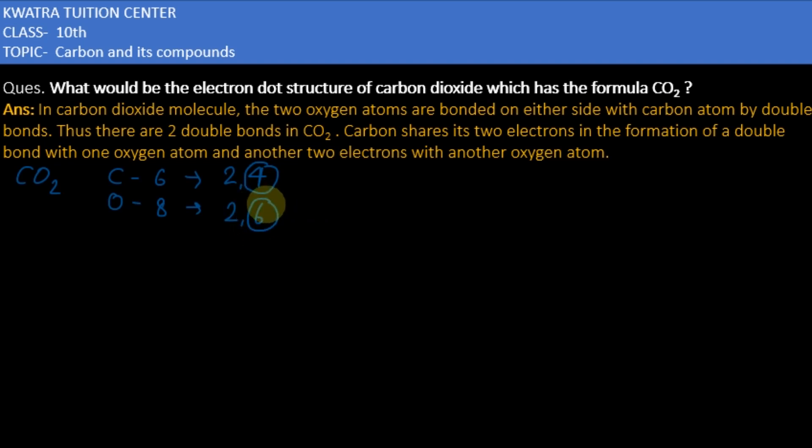For electron dot structure, first let's talk about line structure. There are 2 oxygen atoms present and 1 carbon. So 1 carbon is attached to 2 oxygen by 2 double bonds. So this is a line structure.